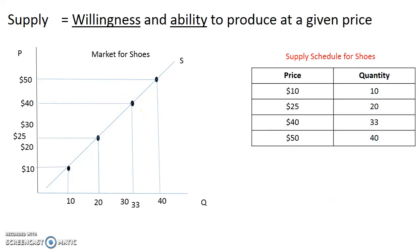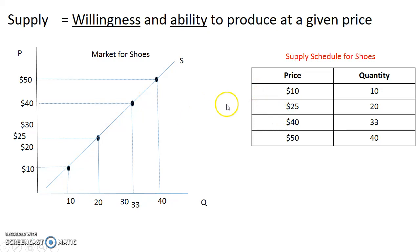This is the graphical representation of the relationship between price and quantity supplied, but you also have it in a table called the supply schedule. Here you can see that positive relationship: as price goes up, the quantity supplied of shoes also goes up.